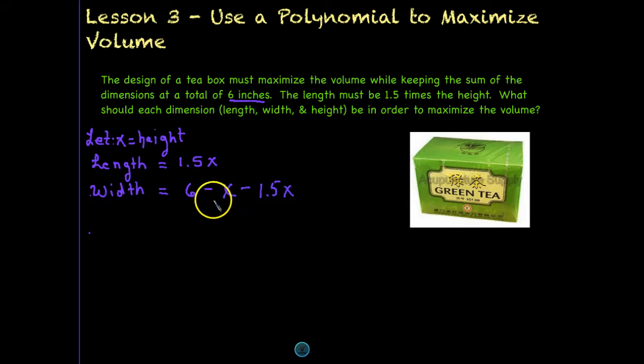So let's go ahead and simplify this just a little bit. We have two like terms here. We have an x and we have a 1.5x, and we need to put those together. So our width is going to be 6 minus 2.5x. Remember that if there's nothing in front of the x, it's like having a 1 there. So a negative 1 plus a negative 1.5 or a negative 1 minus 1.5 is the same as a negative 2.5. And that's our width.